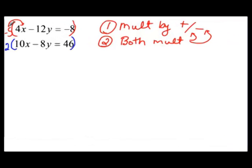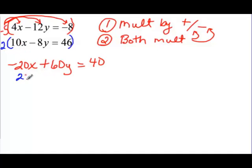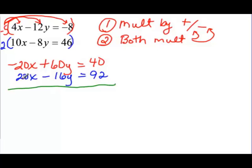Remember, you have to multiply every term. So negative 5 times 4x would be negative 20x. Negative 5 times negative 12 would be plus 60y. And negative 5 times negative 8 would be positive 40. For the second equation, 2 times 10x would be positive 20x, 2 times negative 8y would be minus 16y, and the constant becomes 92. So when I add these two equations, the x terms cancel out — negative 20x plus 20x cancel. Then 60y plus negative 16y gives me 44y, and 40 plus 92 gives me 132. Dividing by 44, I find that y is equal to 3.